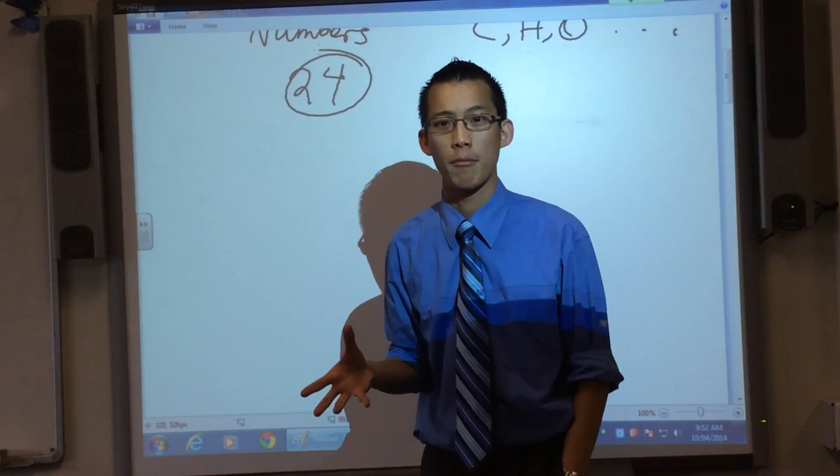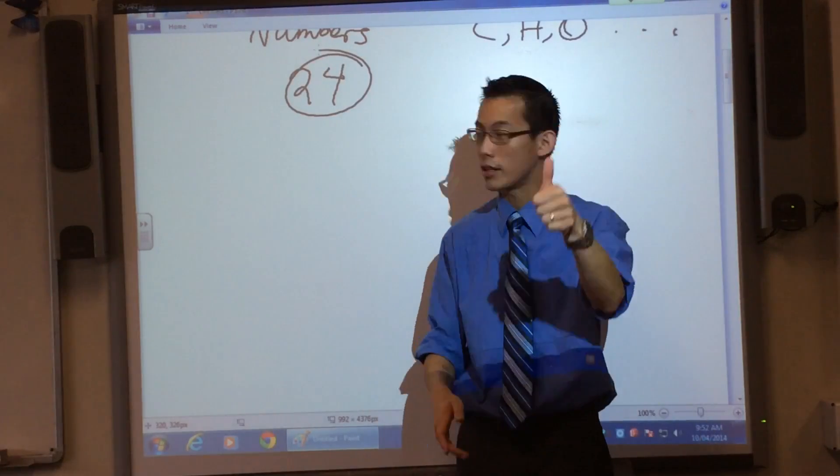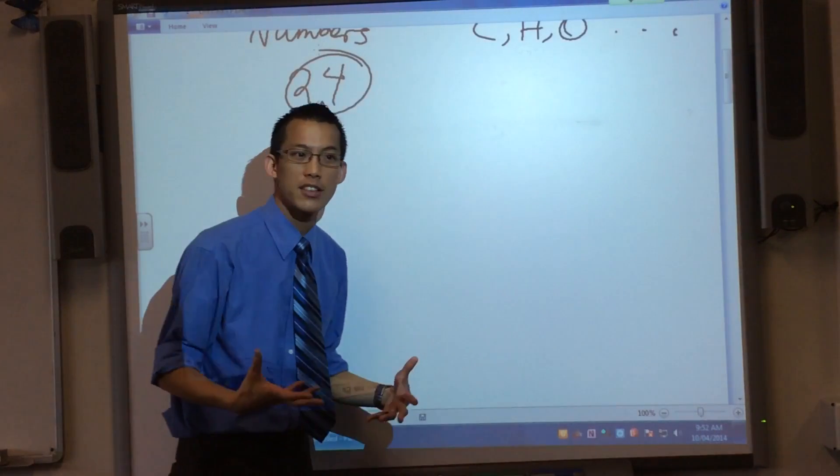We draw a particular kind of diagram, right? What does it look like? We call it a factor tree. So there's a few different ways you can draw it.